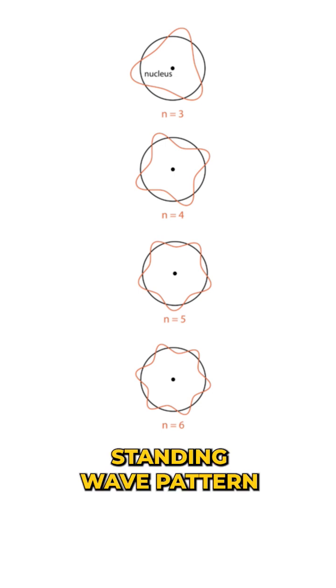That means whenever this condition is satisfied, the electron forms stable standing wave patterns around the atom that do not collapse into the center, thus giving rise to a stable atom.